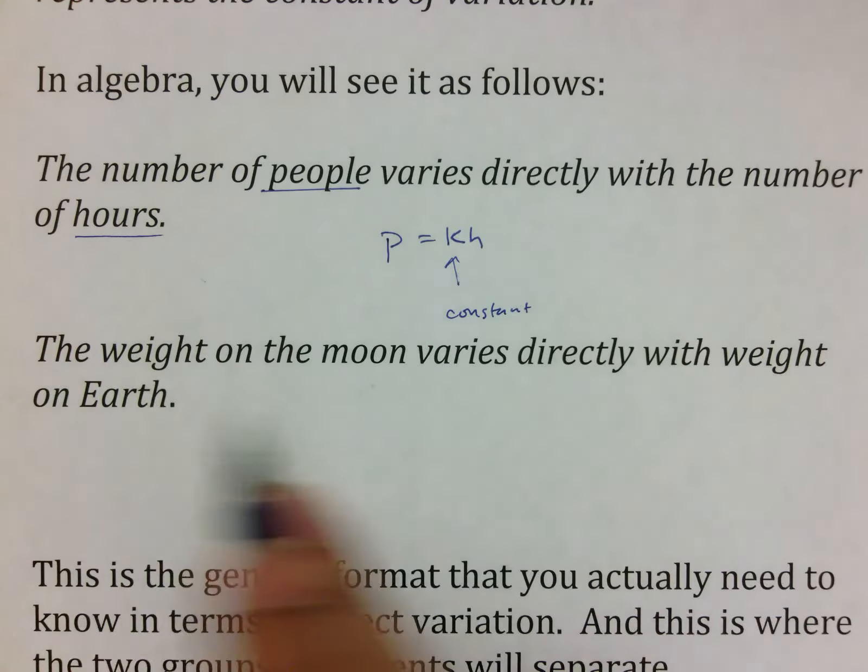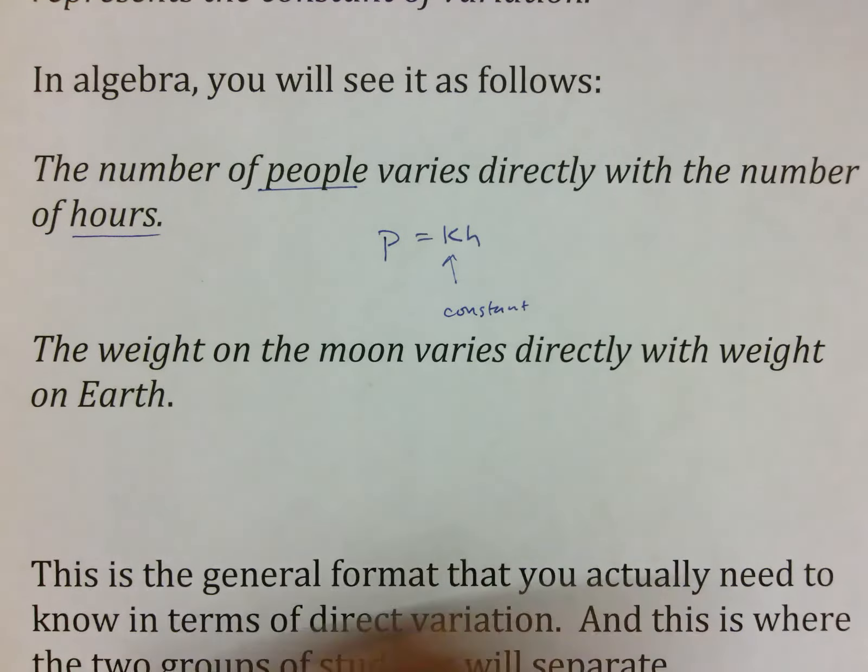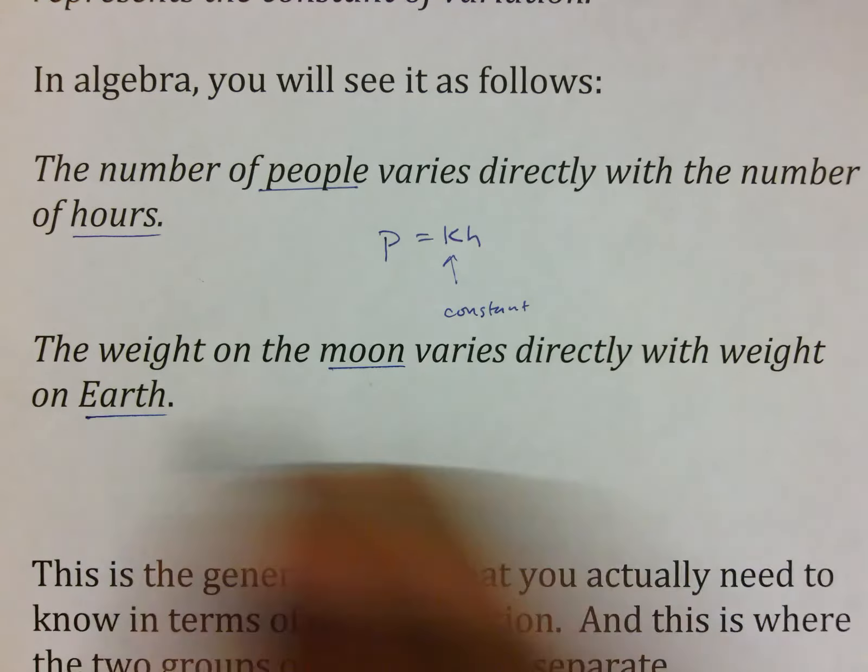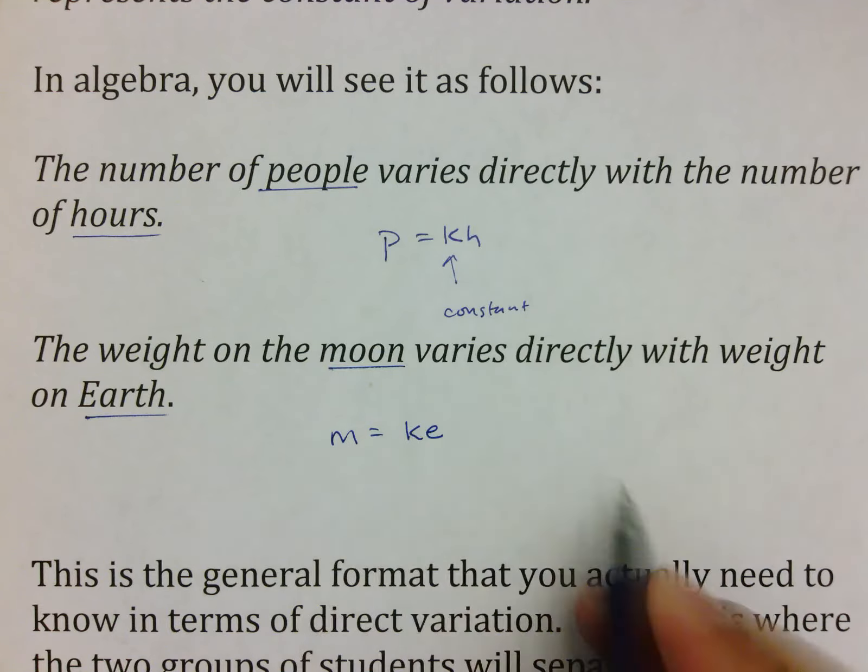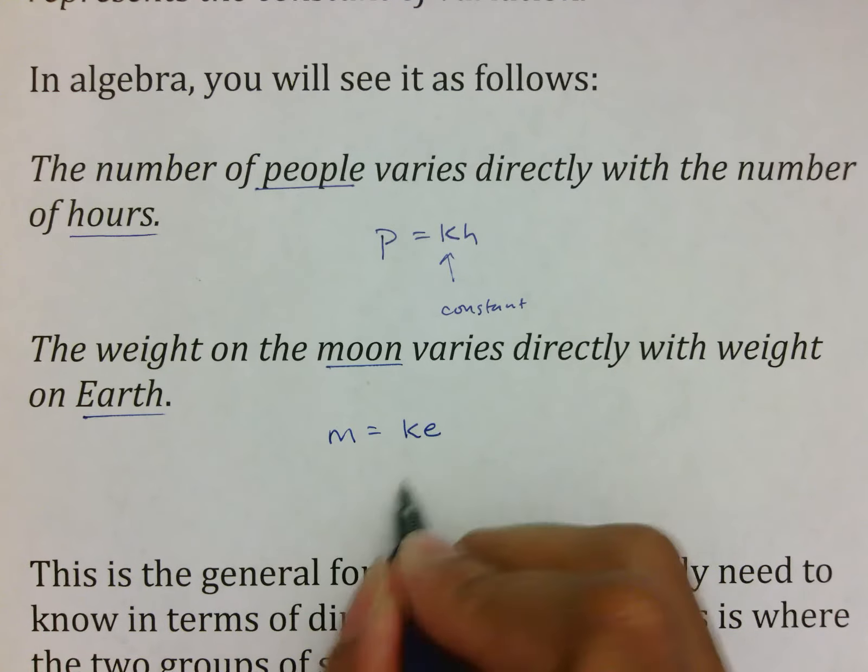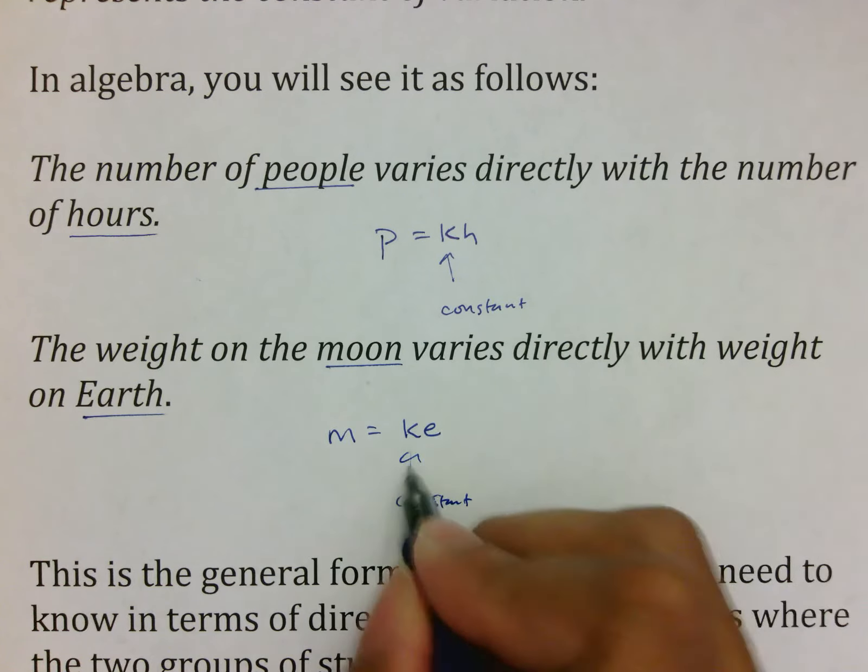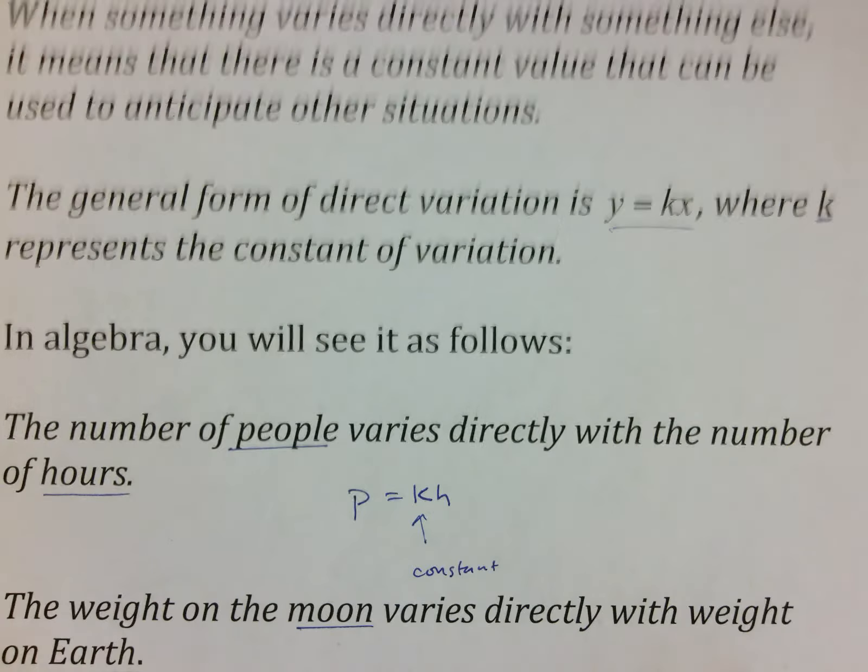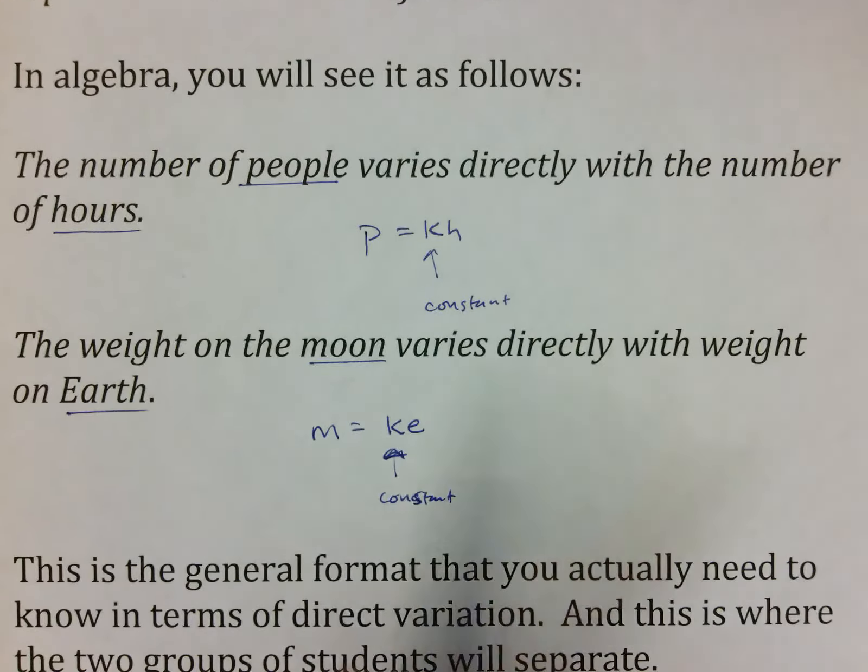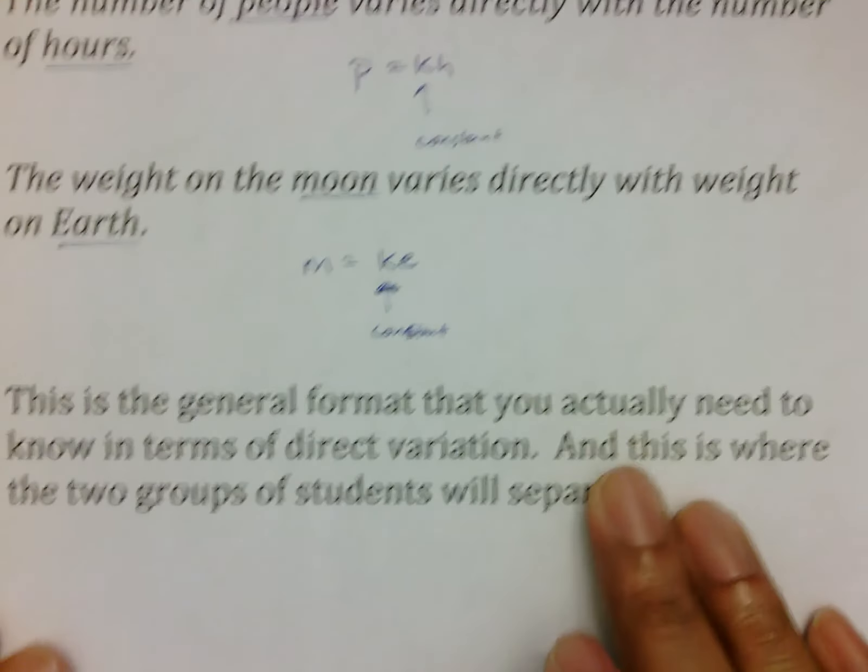You could see something like the weight on the moon varies directly with your weight on Earth, which again, looking at things here, moon would be an important word there. Earth would be an important word there. So you would put m equals k times e. The moon's weight and the Earth's weight are connected by some sort of a constant. And that is pretty much your direct variation equation. We just make it general, y equals kx most of the time. But if you ever see the phrase, you'll use a formula that's more realistic for you. And then that will help you solve it.